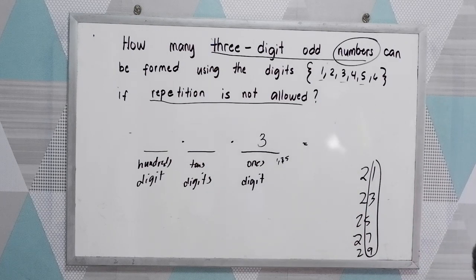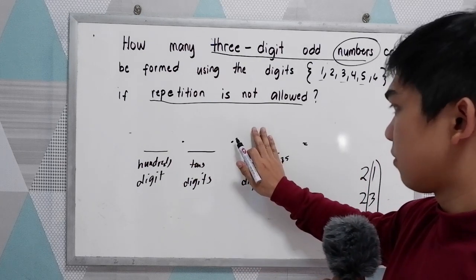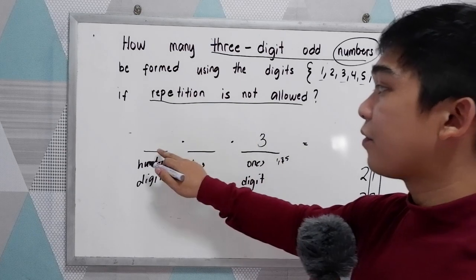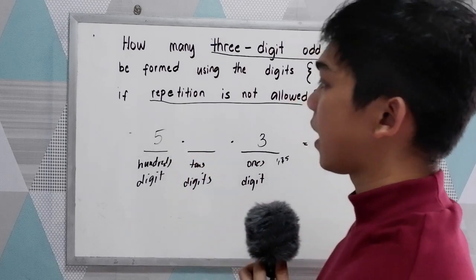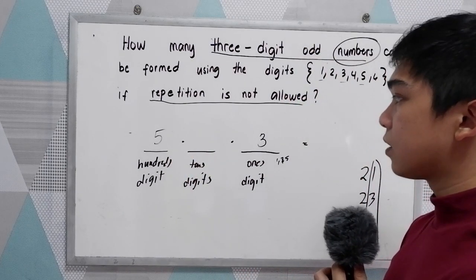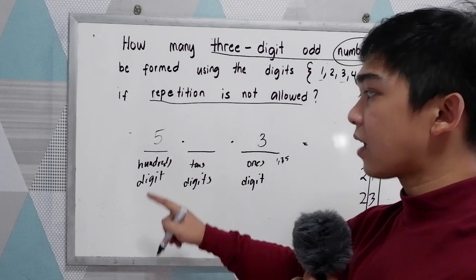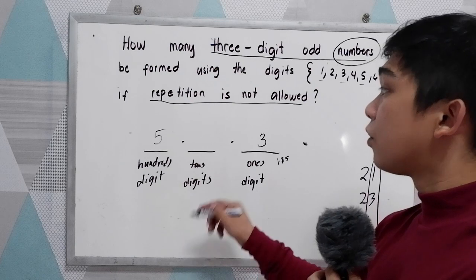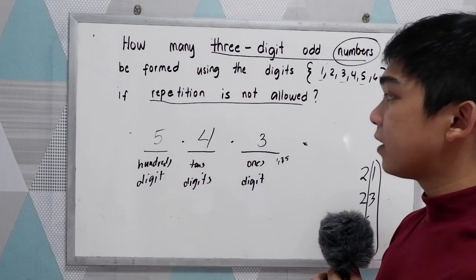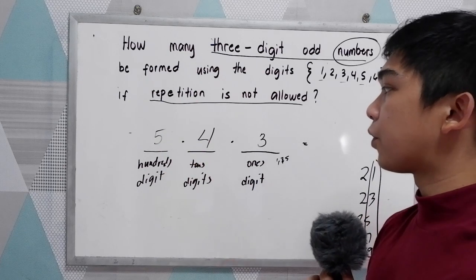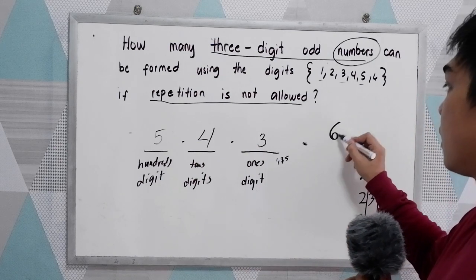Next, if we already used 1 digit as our 1's digit, how many options are left? There are 5 options left. Then, since we already used 1 digit as the 1's digit and another digit as the 100's digit, we have 4 options left for the 10's digit. Multiplying: 5 times 4 is 20, times 3 is 60.